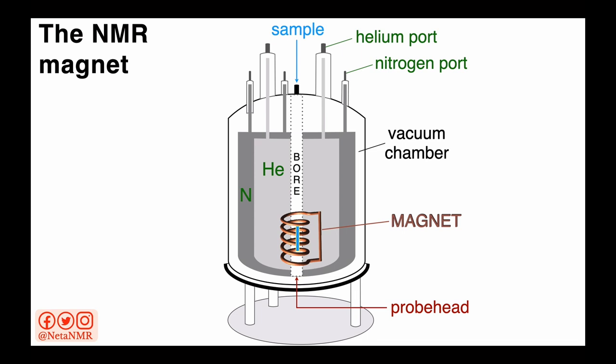This is done in order to slow down the liquid helium from boiling off and having to refill it often, which is a problem because of the high cost of liquid helium and the scarce helium resources. Some of the newer magnets no longer use liquid nitrogen but have a system of liquid helium reliquefaction, thus reducing the need to refill the magnet with liquid helium.